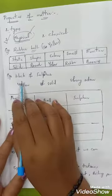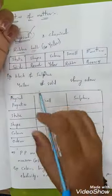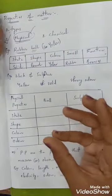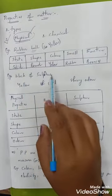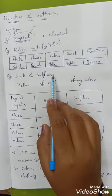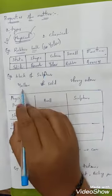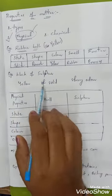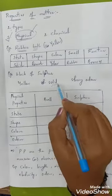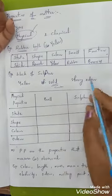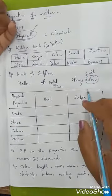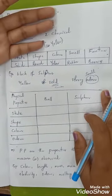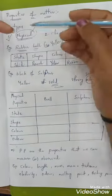Another example is a block of sulfur. Sulfur exists in yellow color, is in a solid (crystalline) state, and has a strong odor. All these properties can be stated immediately by observing. The properties of these two substances — the rubber ball and the block of sulfur — that we can say immediately on observing are said to be physical properties.